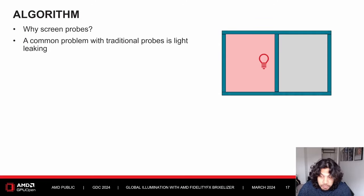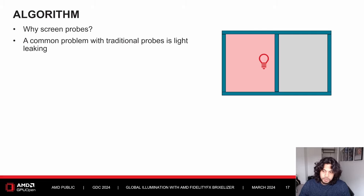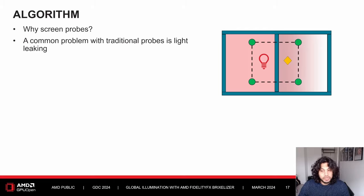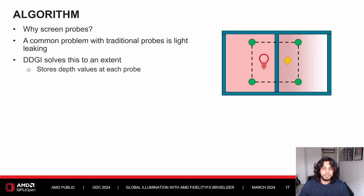Take two rooms separated by a wall: the left side is lit with a red light source and the right side is fully unlit. If we shade a position in the right side using the surrounding probes, some probes are on the lit side of the room. When we interpolate the probes, some of the red light from the left side will leak into the right side. You can mitigate this with smarter probe placement, but it's not fully solvable. The DDGI algorithm does address this to an extent using a depth map at each probe evaluated during sampling.